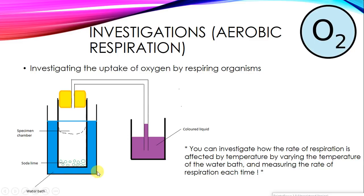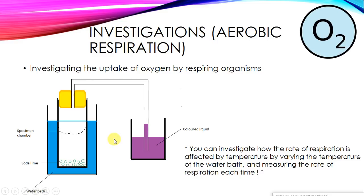This water bath is to control the temperature, keeping a constant temperature around the specimens and the whole system, because temperature plays a role in changing the rate of respiration. The higher the temperature, generally the higher the rate of respiration, and vice versa. By varying the temperature of the water bath and measuring the rate of respiration at each temperature, you can find out how respiration rate changes. As you increase the temperature, the rate of respiration should increase, unless you reach a point where you're denaturing the enzymes.